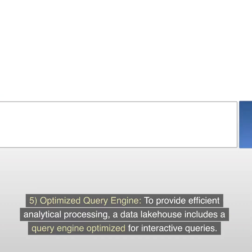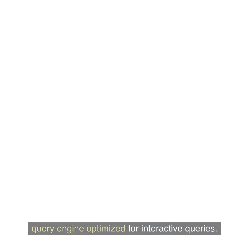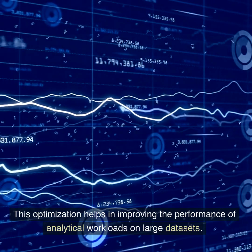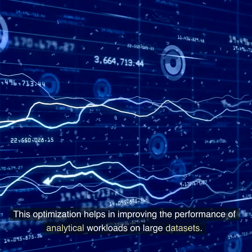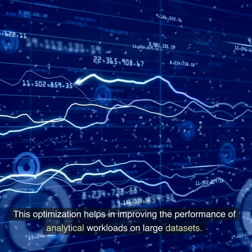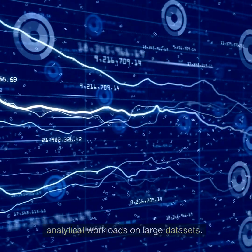5. Optimized query engine. To provide efficient analytical processing, a data lake house includes a query engine optimized for interactive queries. This optimization helps in improving the performance of analytical workloads on large datasets.